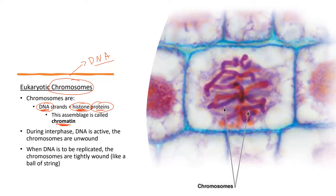Chromatin is usually found during interphase — around the G1 stage where the cell is doing its cellular activities. The DNA is being used; we need to make proteins and enzymes all the time. So chromatin is more like a loose structure of DNA with proteins, but it's the same thing — chromatin is DNA with proteins.